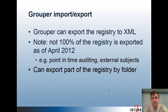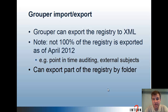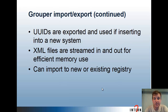Grouper import/export: Grouper can export the registry to XML, though not 100% of the registry is exported at the current time. For example, point-in-time auditing and external subjects are not going to be exported. You can export part of the registry by folder if you just want to move part of the registry to another environment. UUIDs are exported and used if inserting into the new system, and if the object already exists with a UUID, it'll use the existing one. XML files are streamed in and out for efficient memory use, so no matter how big your registry is, you shouldn't run out of memory.